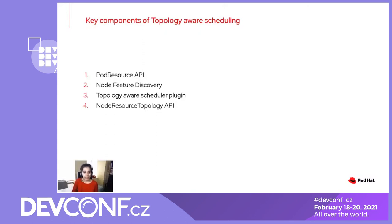The Topology Aware Scheduler Plugin uses the per-node CRD instance to make a NUMA-aware placement decision. The Node Resource Topology API is the CRD API used by both NFD and the scheduler plugin — it essentially acts as the glue between these two components.